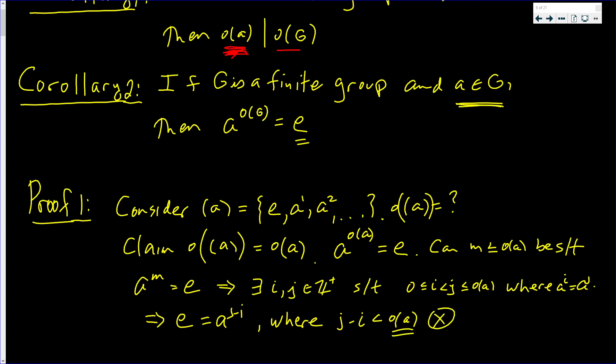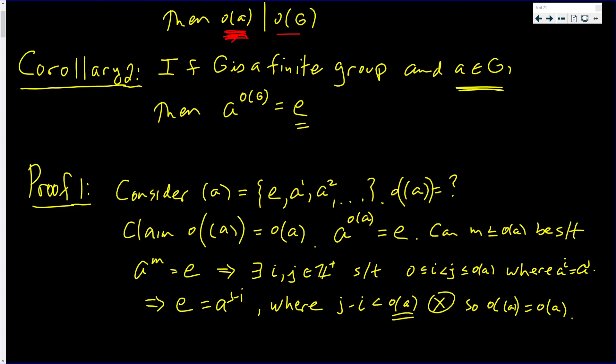The order of A is supposed to be the smallest element that we raise A to to get E. So the order of the set generated by A really does equal to the order of A.